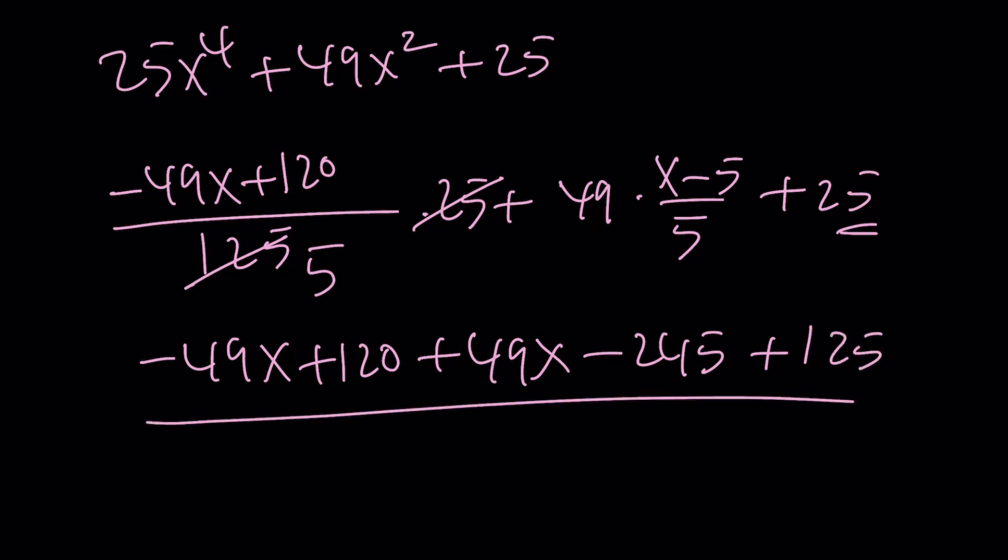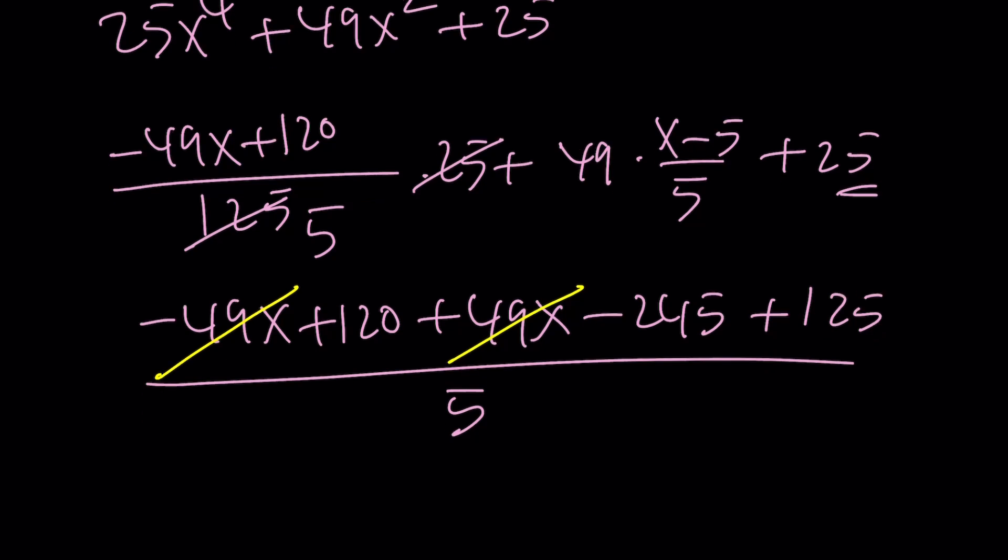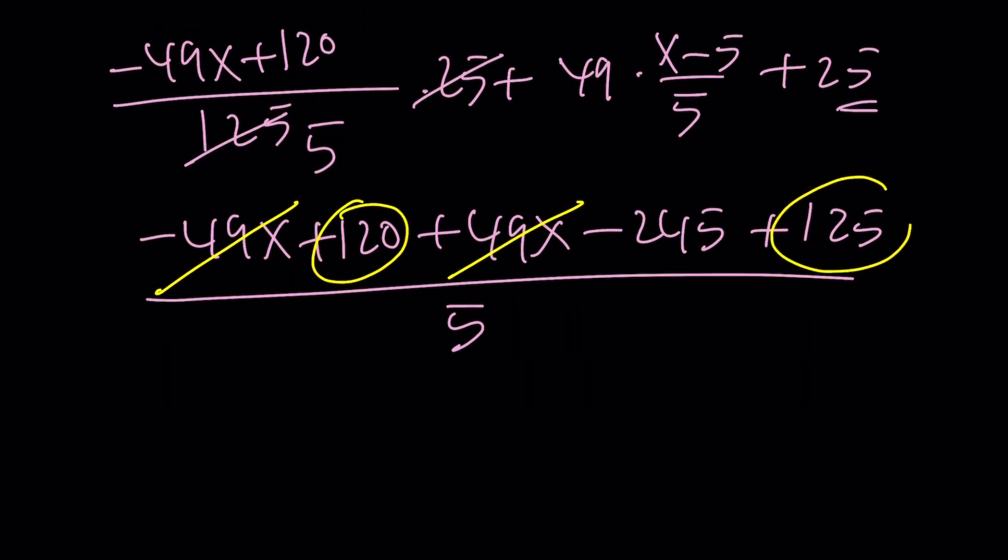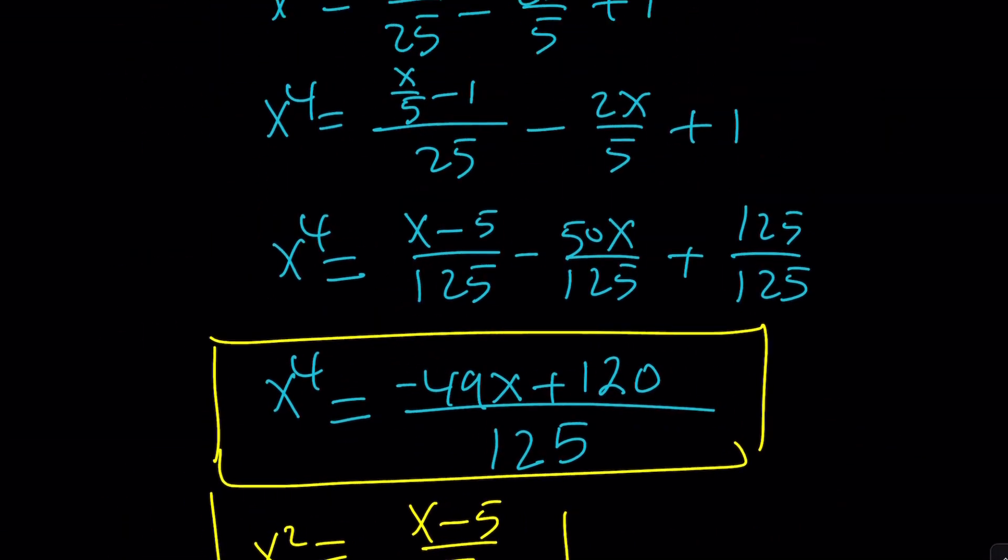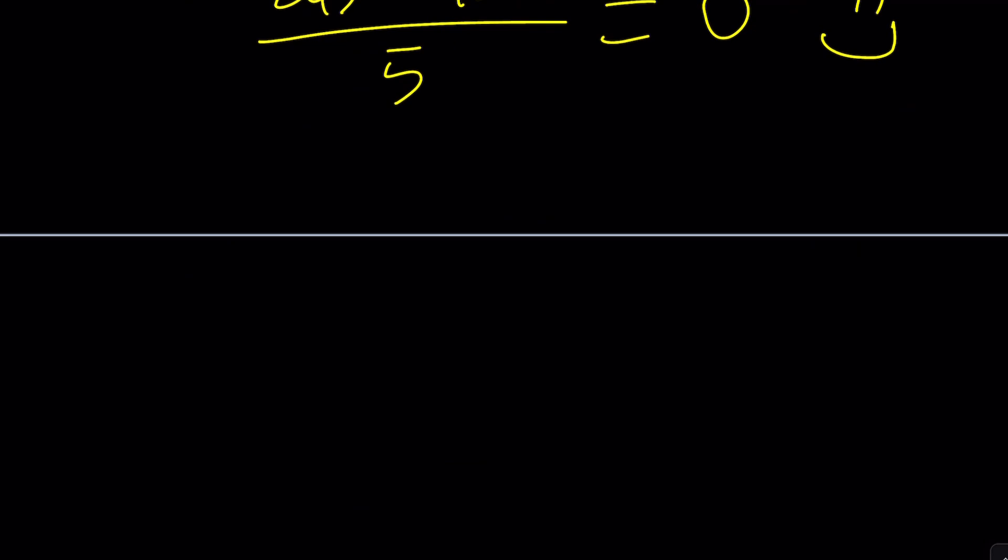And all of that is going to be divided by 5. But what do you notice about this expression that it's independent of x because 49x cancels out and we end up with 120 plus 125, which is 245. Uh-oh. That gave us 245 minus 245 divided by 5, which happens to be 0. Great. That's such a simple answer, right? Great. So let's see how we can do this problem with the third method.